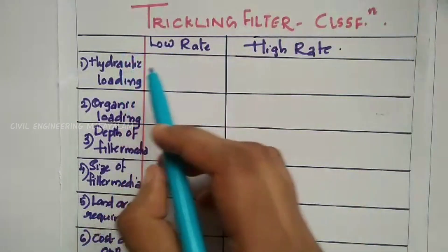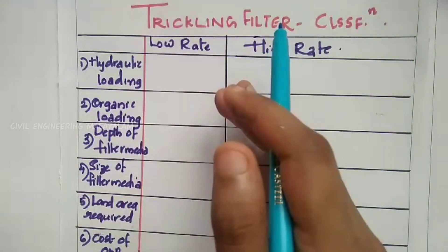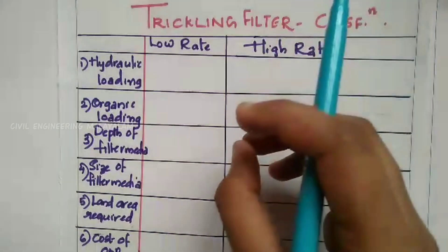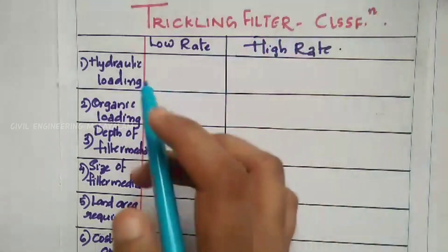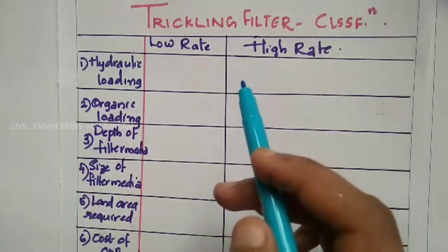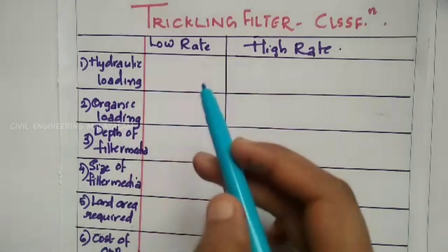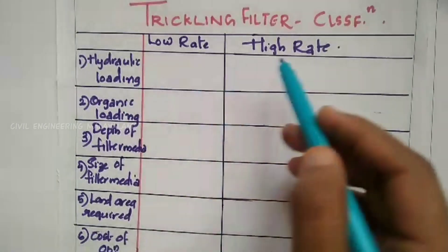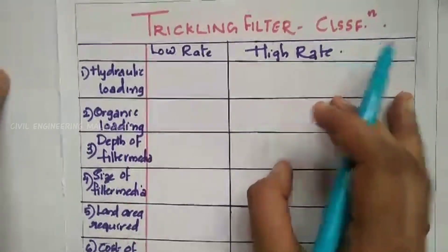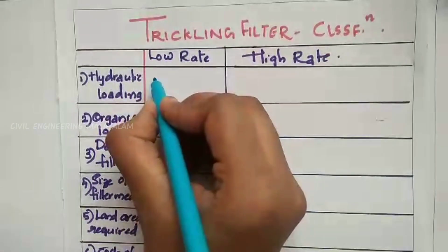Now, we are going to talk about hydraulic loading. The total flow rate is hydraulic loading, including recirculation rate. The hydraulic loading rate differs between low rate and high rate. For low rate, if we have a hydraulic loading program, we take a value of 1 to 30 megalitres per hectare per day.